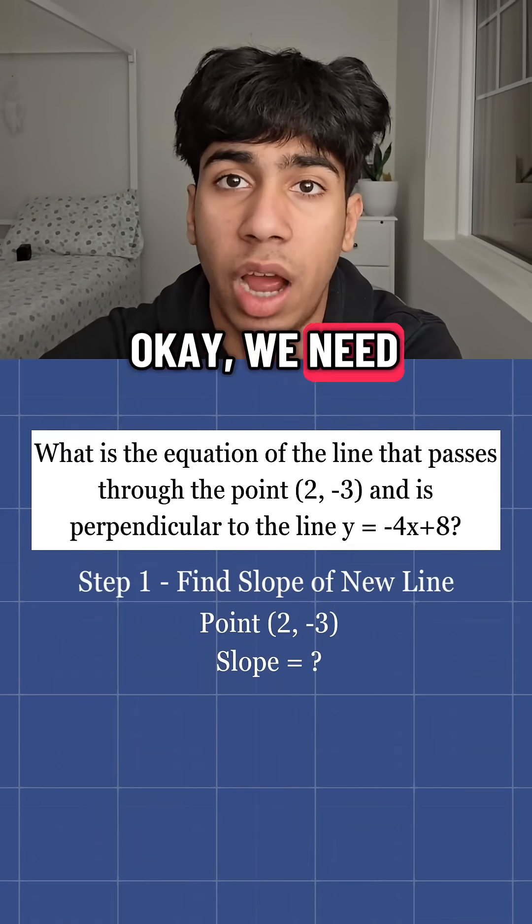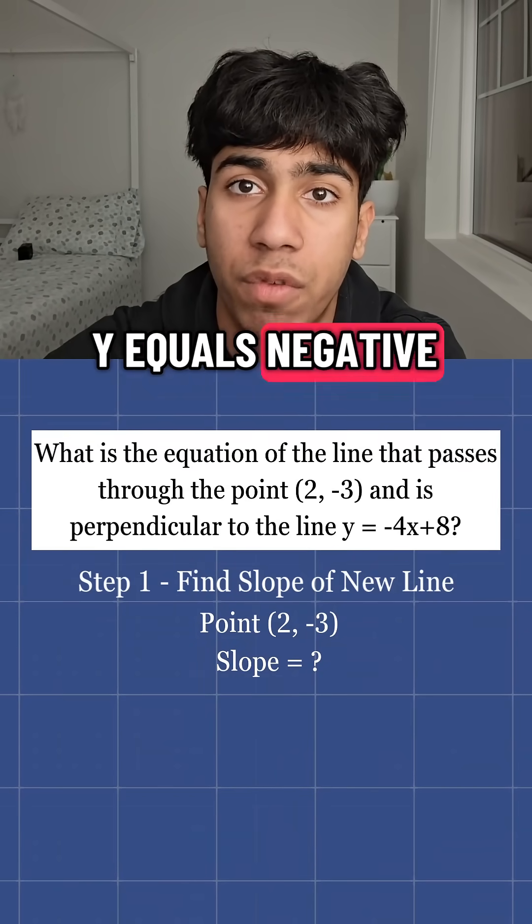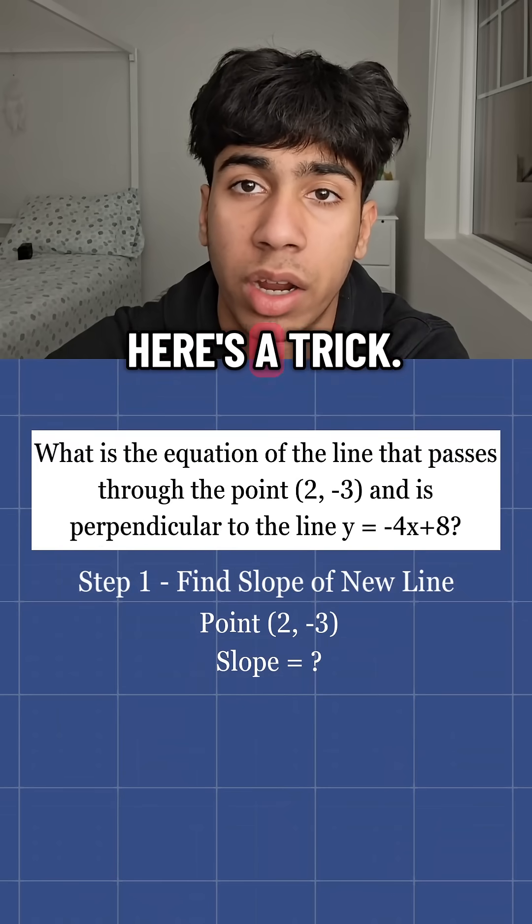Okay, we need a line that passes through the point 2, negative 3, and is perpendicular to the line y equals negative 4x plus 8. Here's the trick.